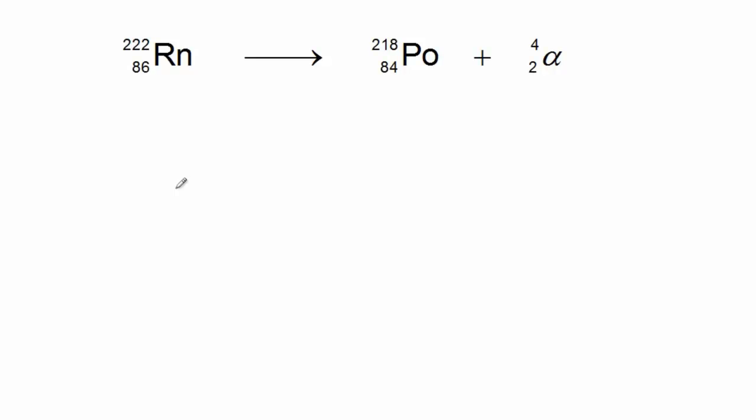The key to balancing a nuclear equation is to make sure that the sum of the superscripts on the left side is equal to the sum of the superscripts on the right side. For example, in this balanced nuclear equation...